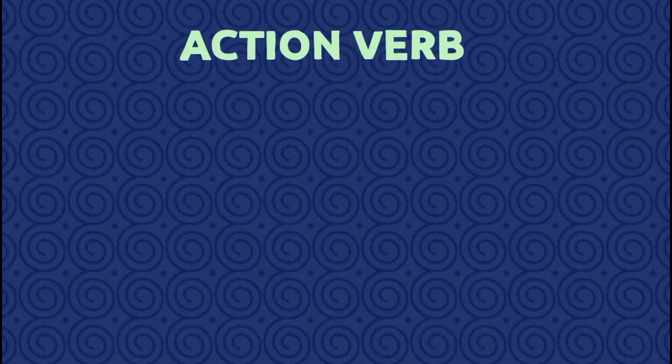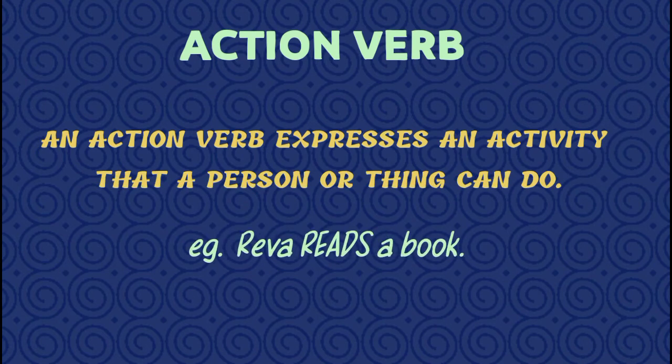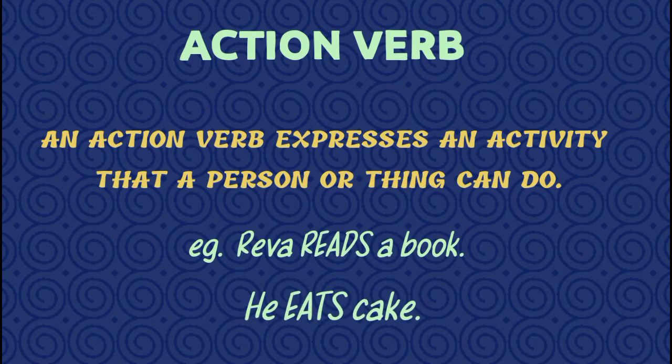Action verb. An action verb expresses an activity that a person or a thing can do. Koi kaam, jo koi rakti, ya koi cheez kar sakti hai, unhain haam action verbs kehte hai. For example, Reva reads a book — reads is an action verb. He eats cake — eats is also an action verb.